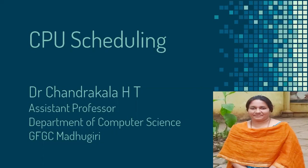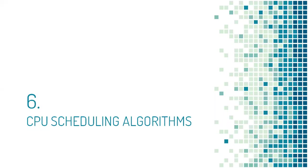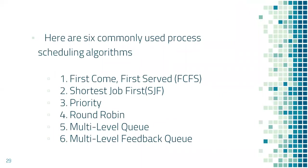This is part 3 video of CPU scheduling, in continuation with the part 1 and part 2 videos which you have viewed earlier. In this video, we will be learning CPU scheduling algorithms. There are 6 commonly used CPU scheduling algorithms: first come first serve, shortest job first, priority, round robin, multi-level queue, and multi-level feedback queue algorithm.